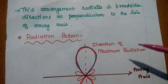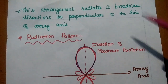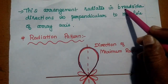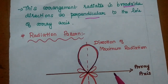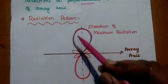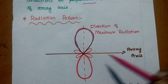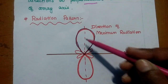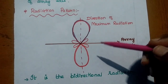Because of this arrangement, the maximum radiation will be in the broadside direction. The broadside direction is perpendicular to the array axis, so the maximum radiation is in the direction perpendicular to the array axis. This results in a bidirectional radiation pattern.